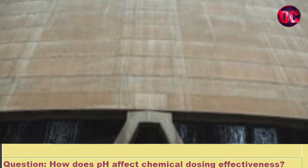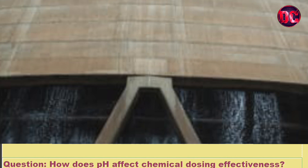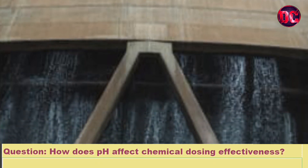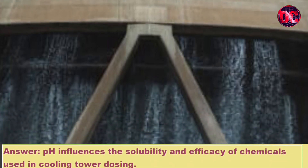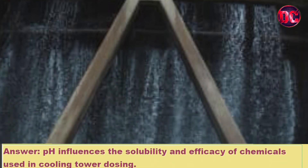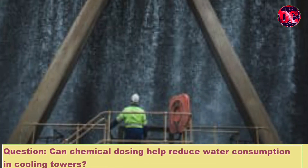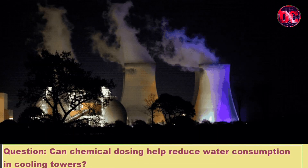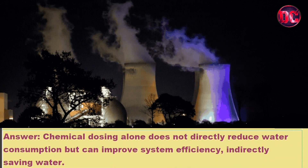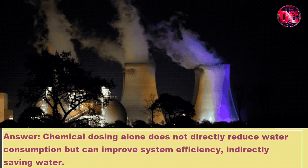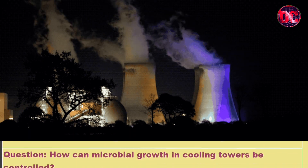Question: How does pH affect chemical dosing effectiveness? Answer: pH influences the solubility and efficacy of chemicals used in cooling tower dosing. Question: Can chemical dosing help reduce water consumption in cooling towers? Answer: Chemical dosing alone does not directly reduce water consumption but can improve system efficiency, indirectly saving water.